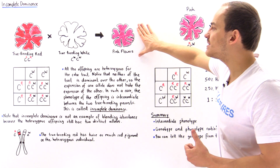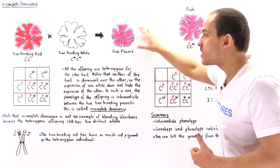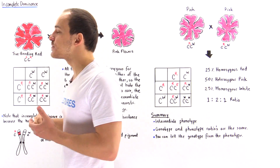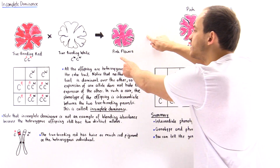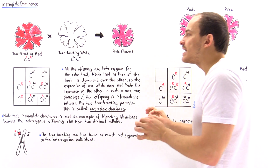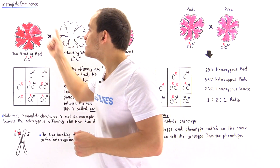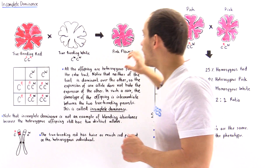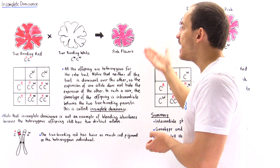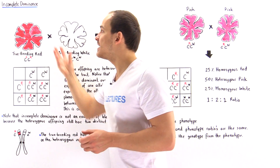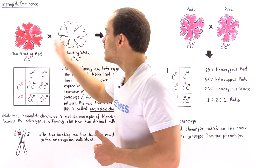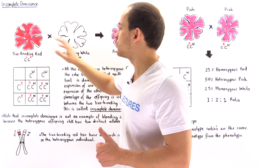Why exactly is this pink? Why is the offspring in between these two phenotypes? Because this offspring has twice as less of the red pigment as the true breeding red individual. Because it has twice as less of the red pigment, it will be less red than that individual, and so it will be somewhere in between the red and the white flower.